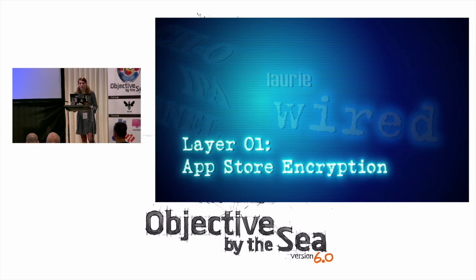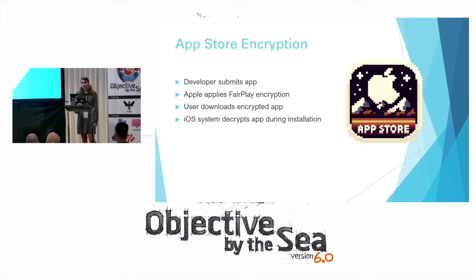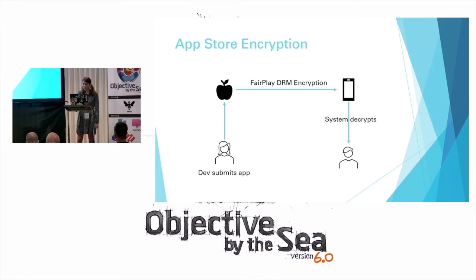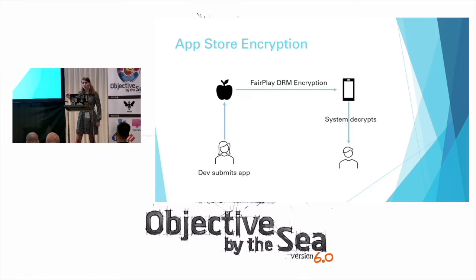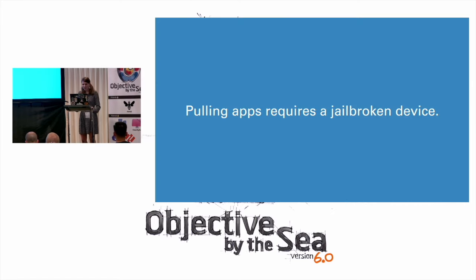Let's talk about the first layer: App Store encryption. iOS apps are encrypted on the App Store. Apple includes this FairPlay digital rights management process, which includes encrypting the iOS application bundle — that IPA file. The developer submits their code for review, Apple encrypts the generated IPA file, and puts the encrypted version on the iOS App Store. This isn't decrypted until it's actually installed on a physical iOS device, which makes getting that application a challenge from the very beginning.